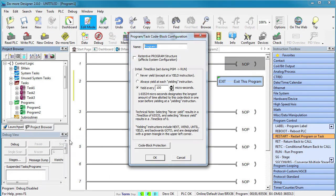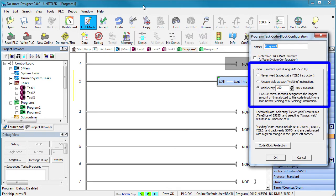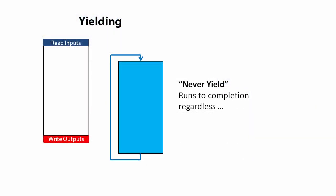To use yielding, you just right click on the program or task. If you choose never yield, a task in a program will run to completion regardless of how long it takes. The only thing that can change that is if you manually put a yield instruction in the code.